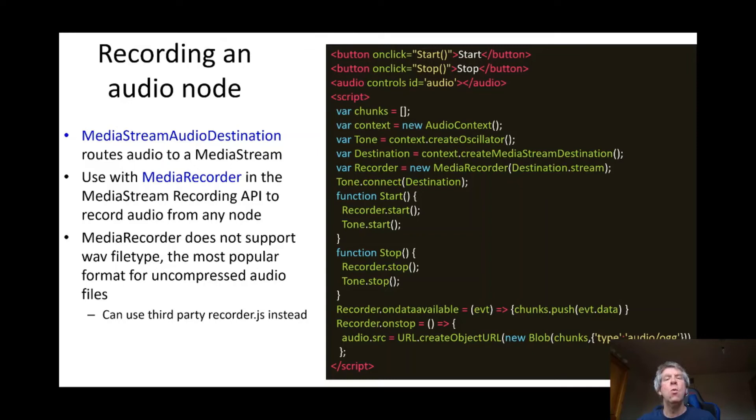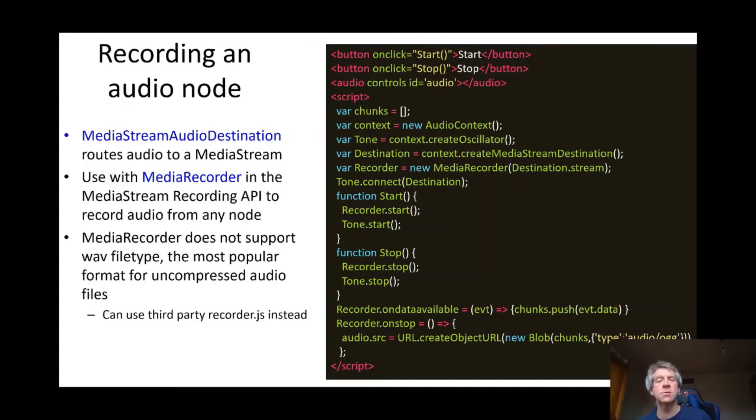Now we move on to recording. For recording an audio node, one uses the node called MediaStreamAudioDestination, and also uses that in conjunction with the MediaRecorder, which is part of a different API — the Media Stream Recording API. The MediaRecorder allows you to record any sound or video. The MediaStreamAudioDestination specifically routes audio from its input node to a media stream as output — it's an output or destination node.